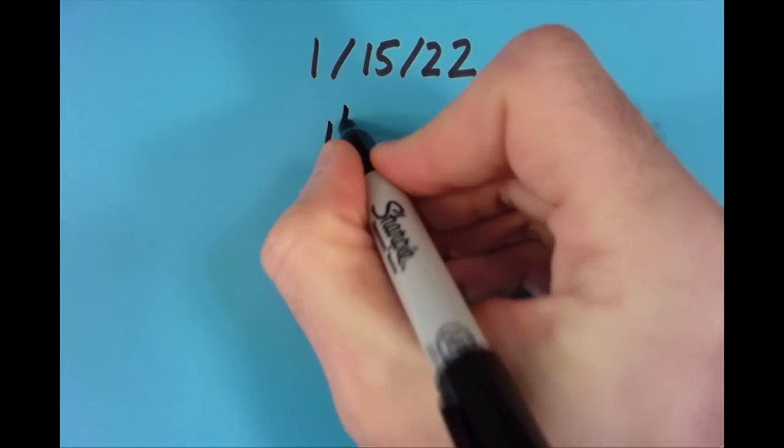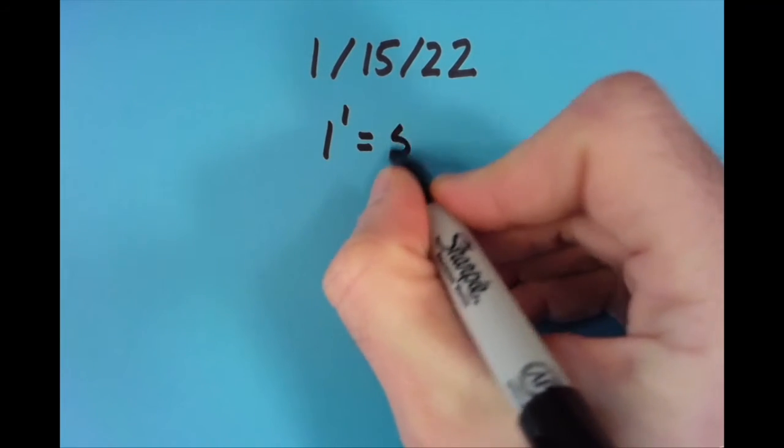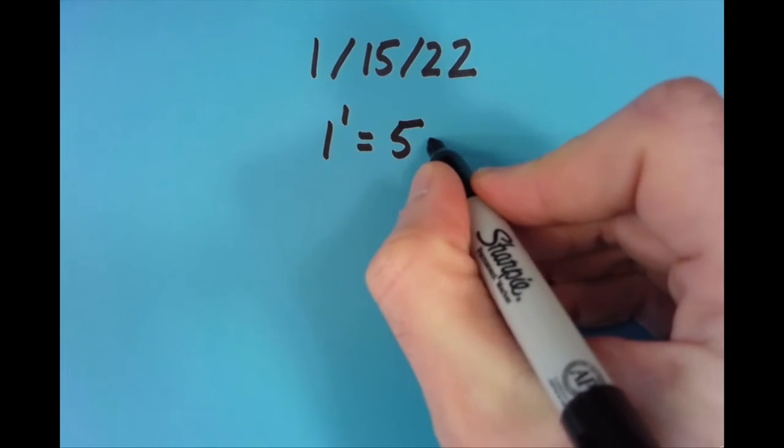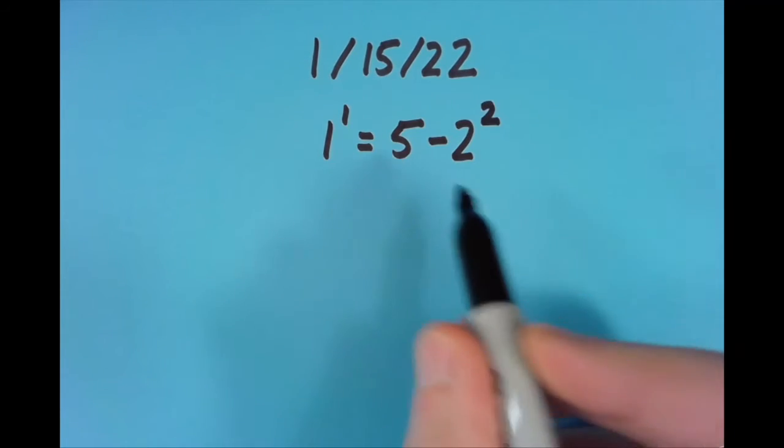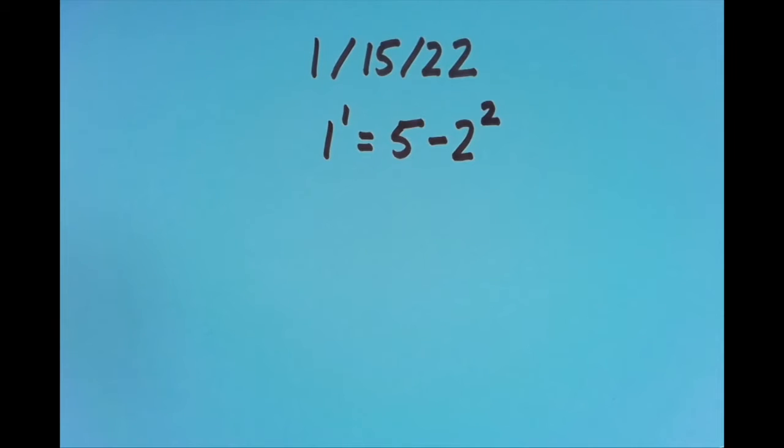The first thing I thought of was this: 1 to the first equals 1, and that's going to equal 5 minus 2 squared. So we have 5 minus 4, which is also 1.